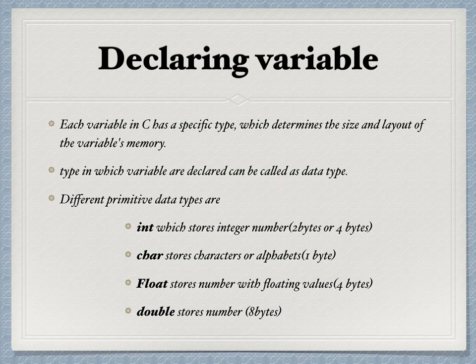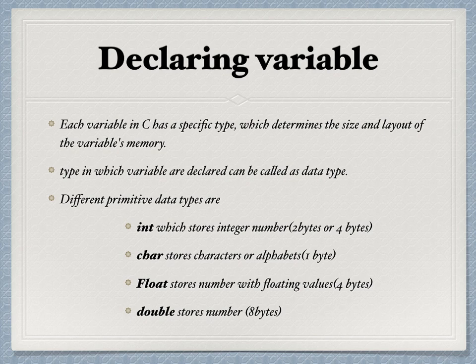The type in which the variable is declared we call it as a data type. In any programming language we call that as a data type. Data type of a variable should be specified to allocate memory because every type has its own memory size. In C programming some of the primitive data types are int, char, float, and double. Int means you are going to store an integer number, char means you are going to store a character or an alphabet, float is for floating values, and double can store large numbers.